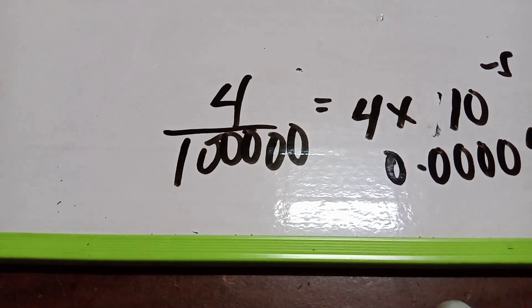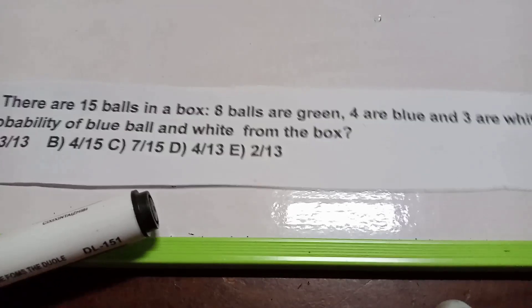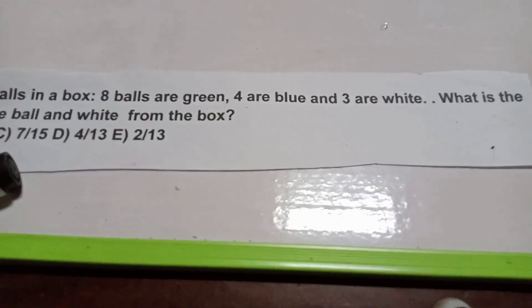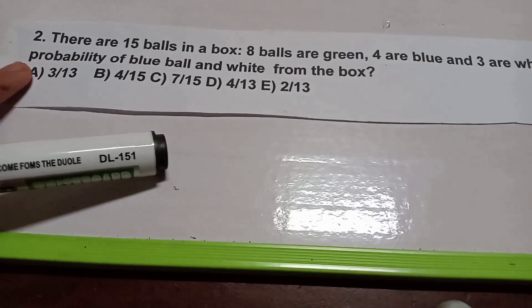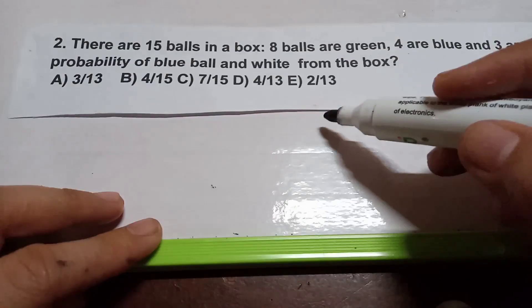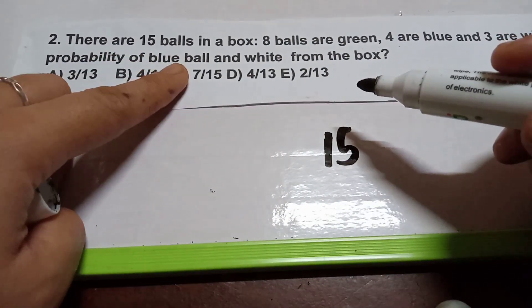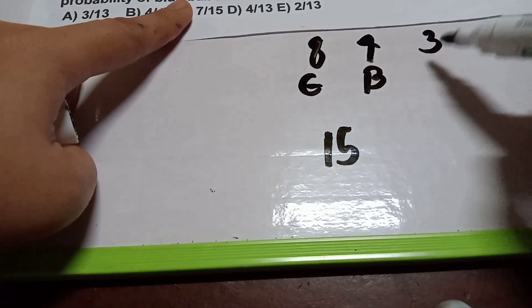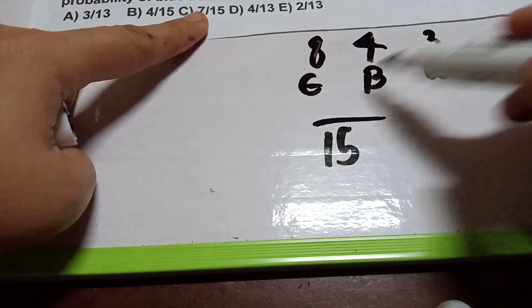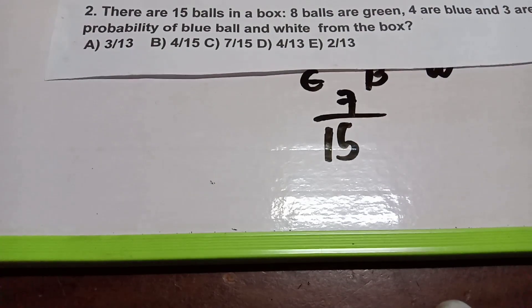Problem number two is about probability. There are 15 balls in the bag: 8 balls are green, 4 are blue, and 3 are white. What is the probability of drawing a blue or white ball? We add all the balls: 8 plus 4 plus 3 equals 15. We combine blue and white: 4 plus 3 equals 7. The answer is 7 over 15.